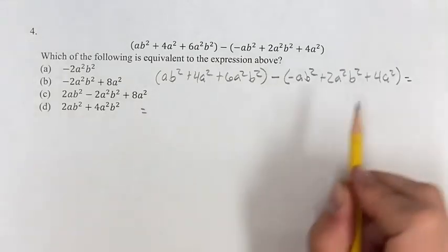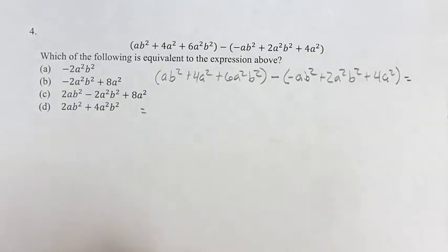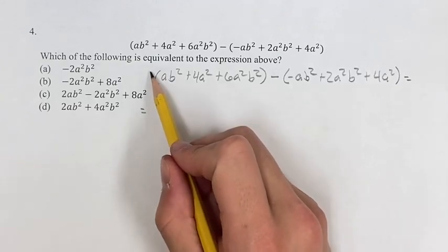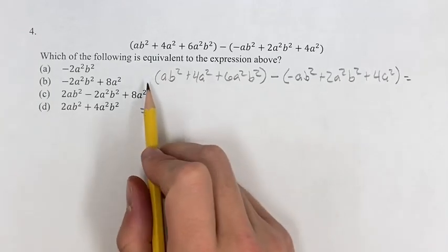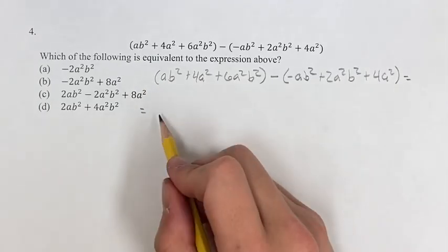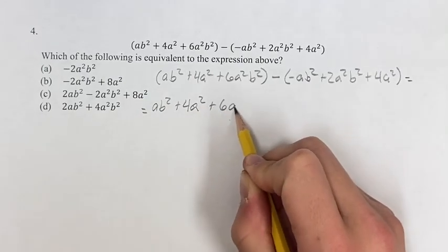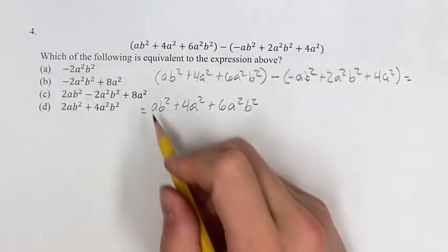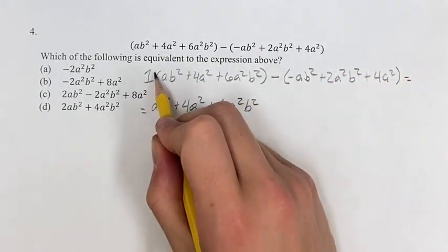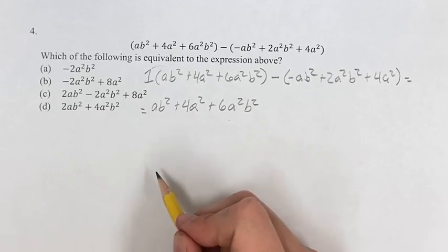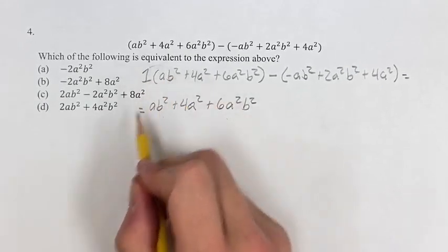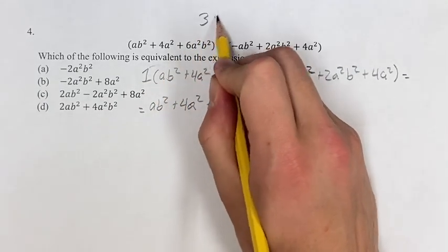So, simplifying this expression, we want to get rid of the parentheses. For our first set of parentheses, we don't have a coefficient or negative sign in front of it, so you can just drop the parentheses and leave all these terms as they are. So this is ab² + 4a² + 6a²b². You can think of this as having a coefficient of 1, and you're just distributing the 1, but it doesn't actually change anything because multiplying by 1 doesn't change the value. 3 times 1 is still 3.